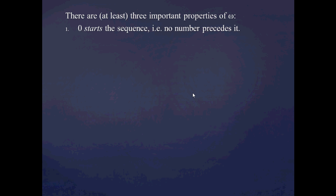So in our discussion of the natural numbers, there are three major properties I'd like to point out. First is that 0 starts a sequence — that is, no number precedes 0. We showed that in the previous video by saying that 0 is not the successor of any number.